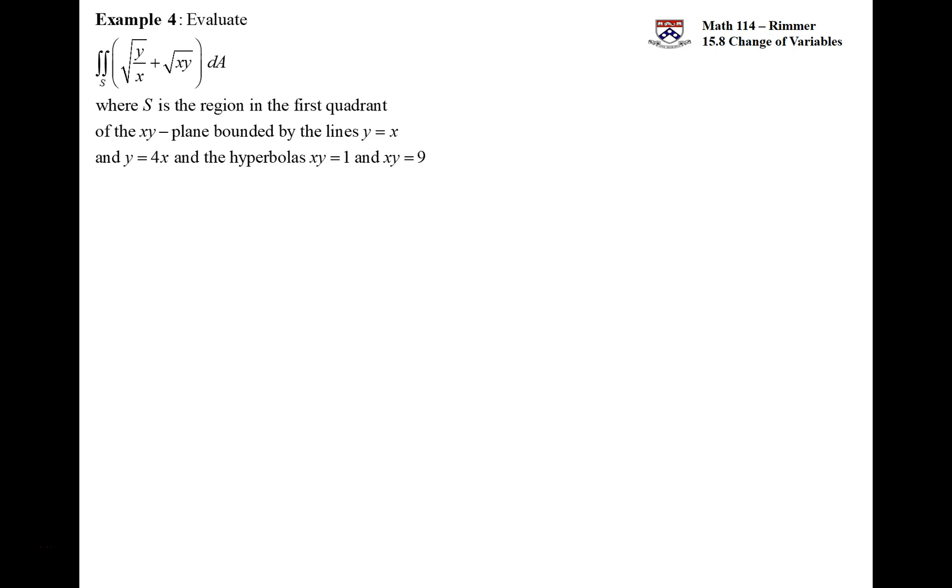Okay, this is a fourth example we're looking at: double integrals and change of variable, or uv substitution. This integrand has y over x inside a square root and x times y inside a square root. Those by themselves might be able to be overcome, but the region in the xy plane is bounded by two hyperbolas and two lines. We have xy equals 1, which is y equals one over x, and xy equals 9, which is y equals nine over x—that's the red and blue respectively.